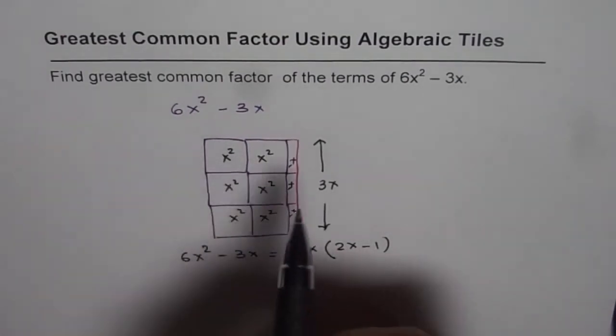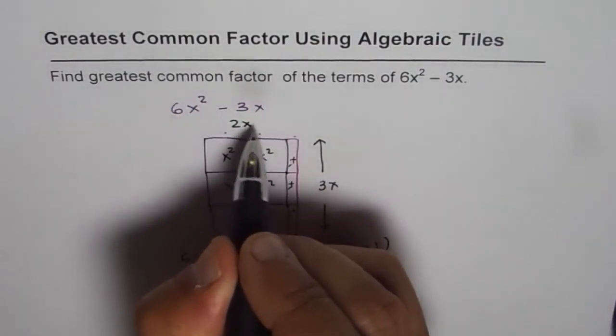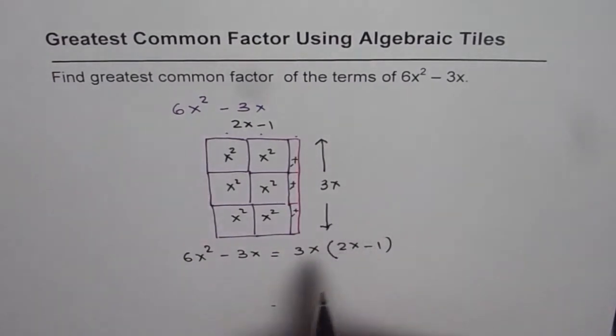And that is the length x and x and minus 1. So it is 2x minus 1 is the length. That is how you can factor and find the greatest common factor of a given polynomial.